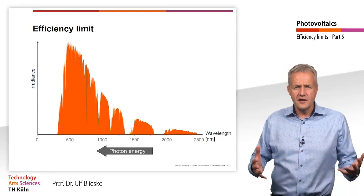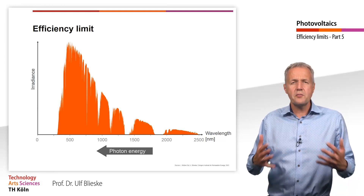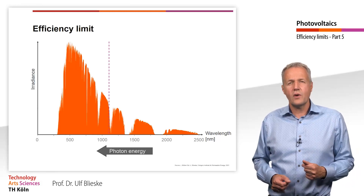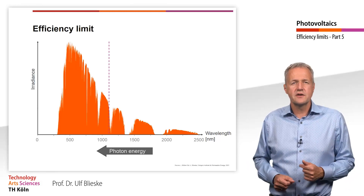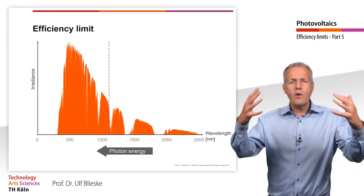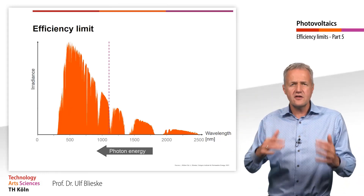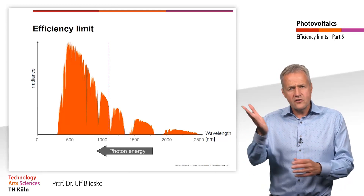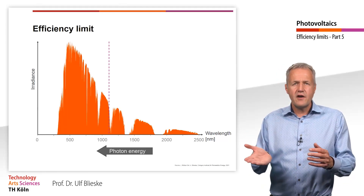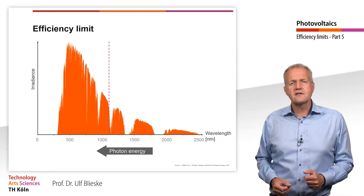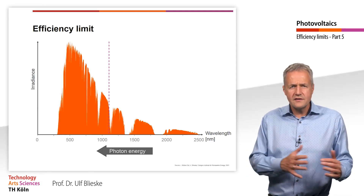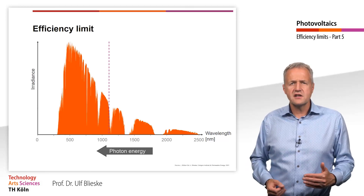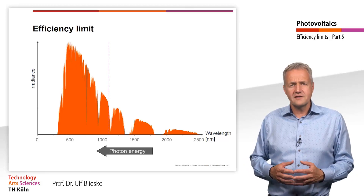In case of silicon, the band gap energy is 1.12 eV. This corresponds to a wavelength of 1120 nm. At higher wavelengths, the photon energy is not sufficient for the photoelectric effect and the photons transmit through the semiconductor. At wavelengths lower than the cutoff wavelength, as the wavelength decreases, a larger and larger fraction of the photon energy is lost as thermalization losses.